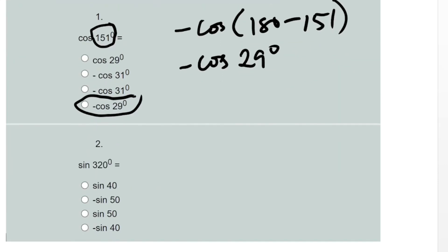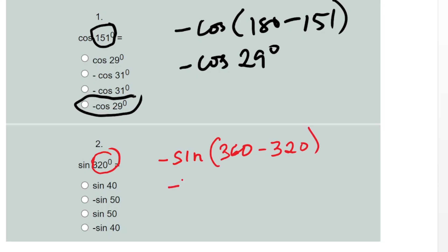The next question asks about sin 320 degrees. We need to determine which quadrant 320 falls in — that is the fourth quadrant. In the fourth quadrant, sine is negative, so this will also be negative: minus sin(360° − 320°), which gives minus sin 40 degrees. That is the last option as well.